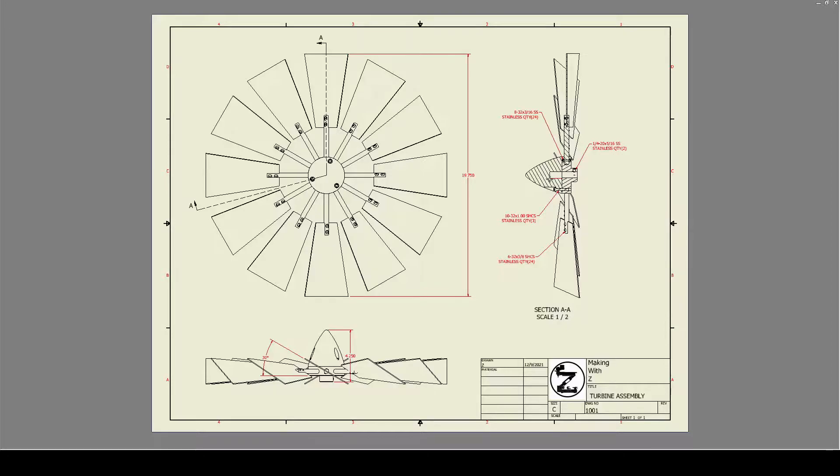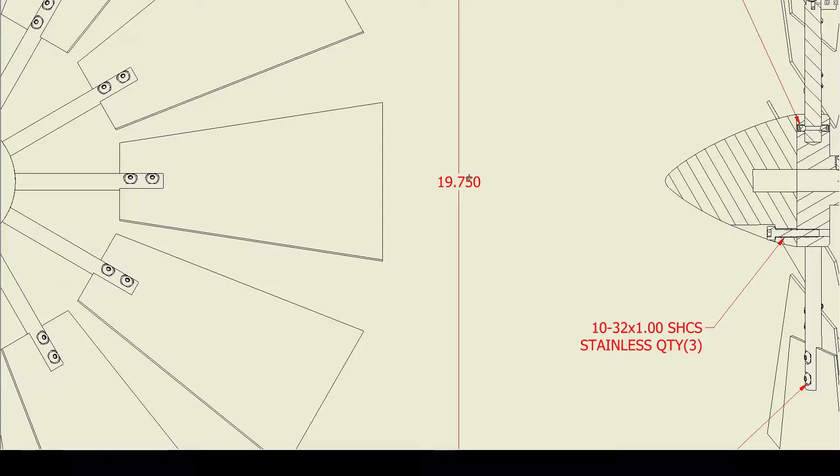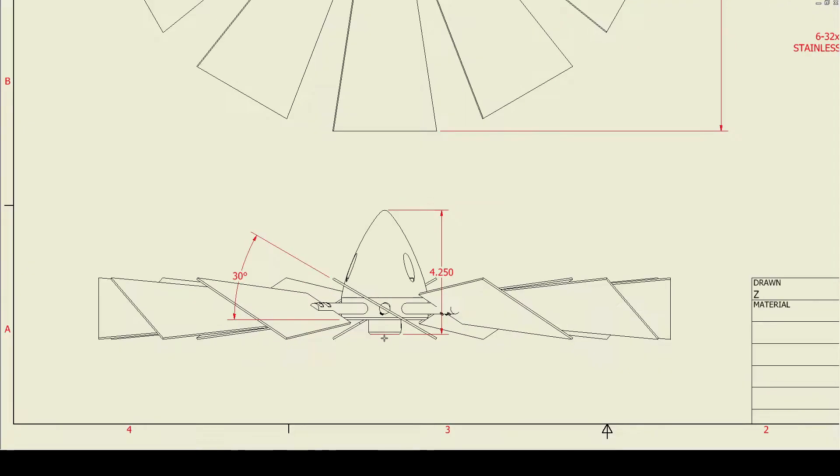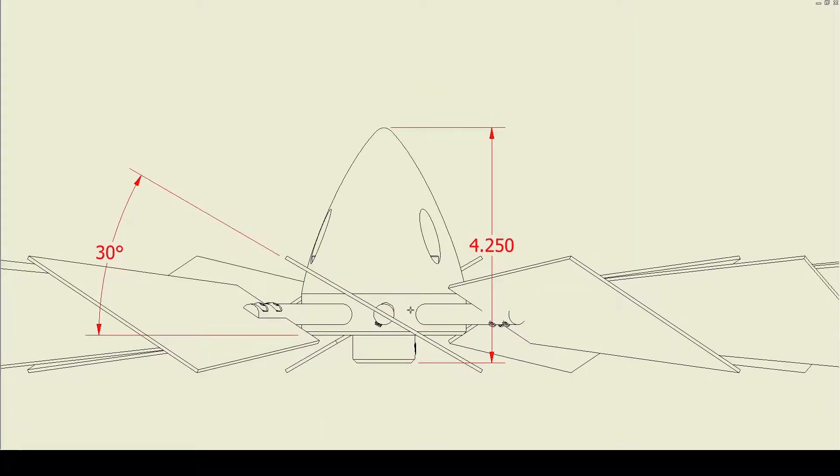This is the turbine assembly drawing showing all the general dimensions. The turbine itself is 19 and 3/4 inches from end to end. The blades are angled at 30 degrees because I used my indexing head, which has increments of 15 degrees. I had a choice of 15, 30, or 45 degrees. I tested it—15 doesn't work really well, but 30 seems to work really good, so that's what I went with. The overall height is 4 and 3/4 inches.